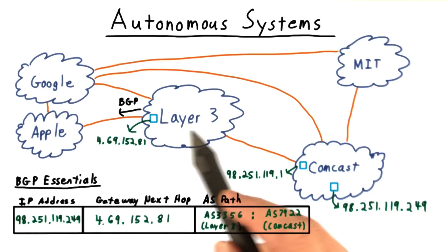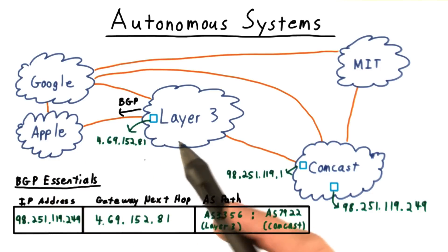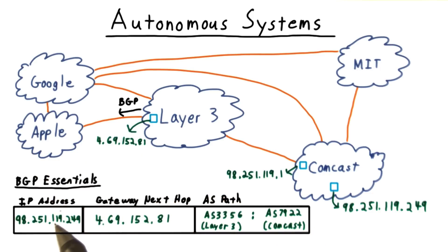One of Comcast's partners, let's say Level 3, then might want to advertise my IP address to, say, the Apple AS. And so it would send another BGP packet with my IP address, their gateway as the next hop, and the AS path of Level 3 and then Comcast.